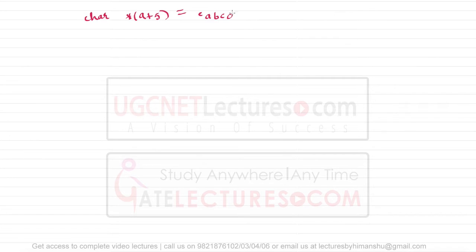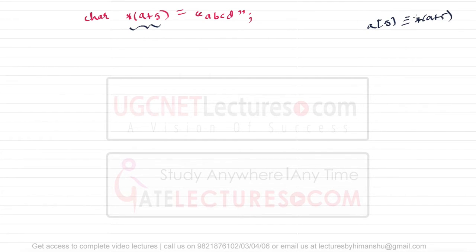Consider this statement: char *a + 5 = "abcd". This is the entire string with closing bracket. When I say a plus 5, this is actually representing a statement like a[5], which is equivalent to *(a + 5). Now we need to identify how many tokens are present in this particular statement.